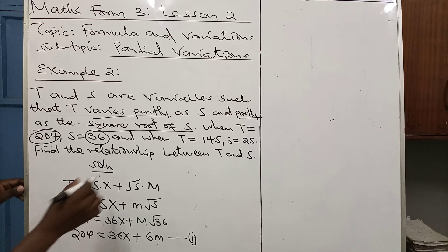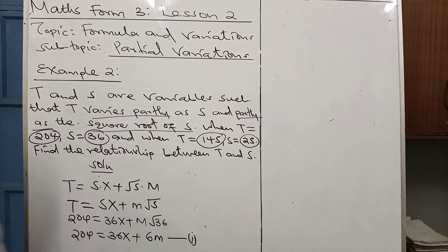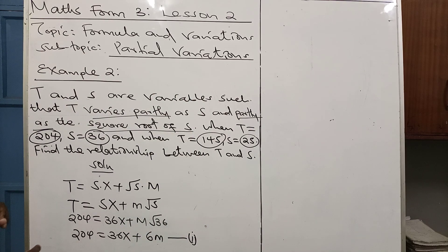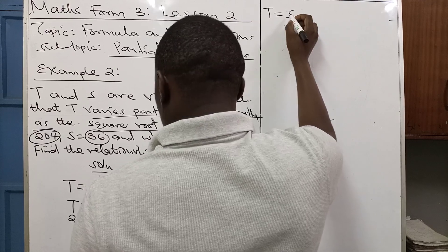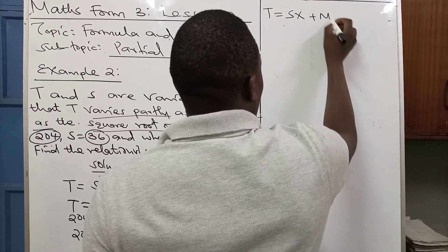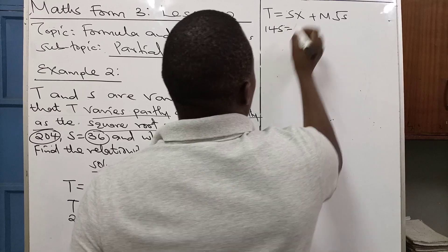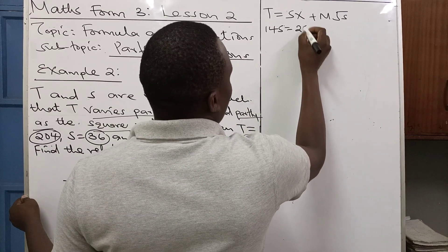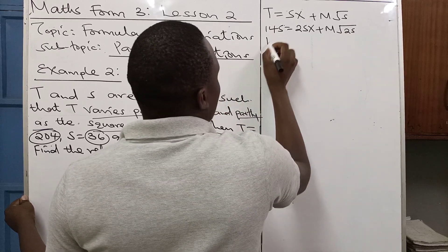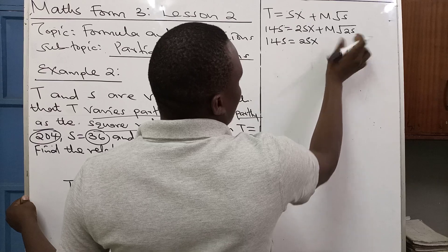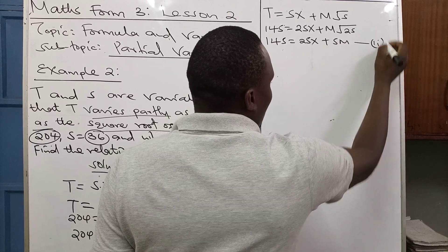Now let's go to the other statement where T equals 145 when S is 25. Given that T equals SX plus M times the square root of S, T is 145, S is 25: so 145 equals 25X plus M times the square root of 25. The square root of 25 is 5, and 5 times M gives us 5M. So 145 equals 25X plus 5M. This will be our second equation.